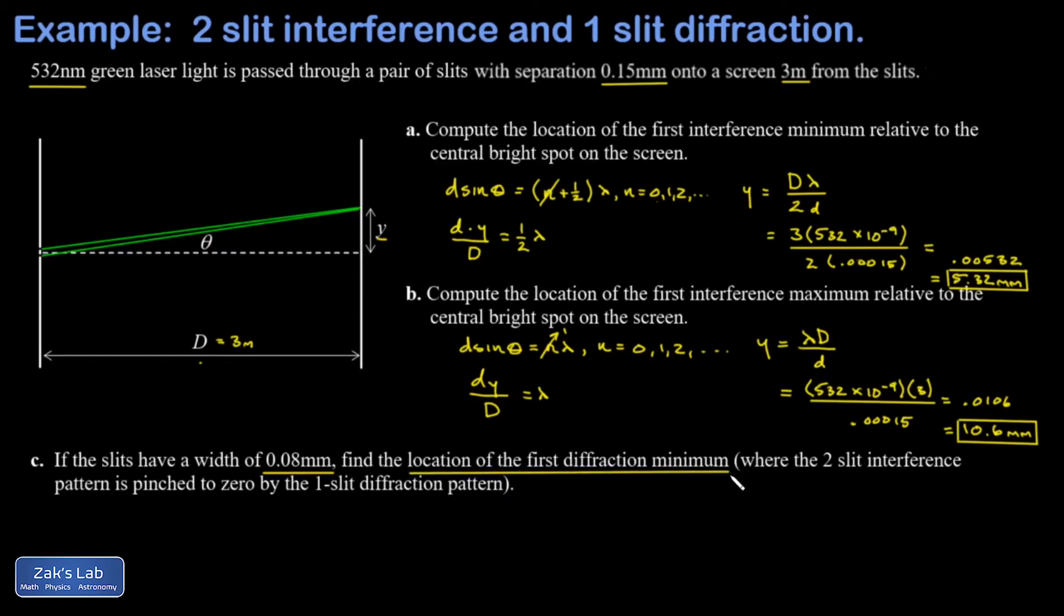So where the slit width itself is causing the intensity of light to go to zero, this diffraction minimum is going to suppress the interference pattern. And again, I'll just post a link to the video where this was derived. It turned out that our diffraction minima occur where a sin θ—that's where a is equal to the slit width—is equal to n λ, where n is 1, 2, 3, and so on. So we just plug in the slit width.